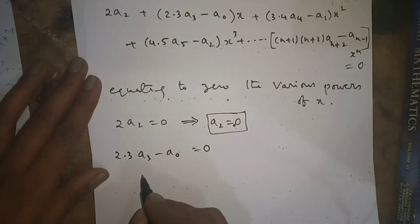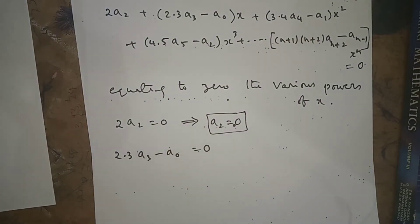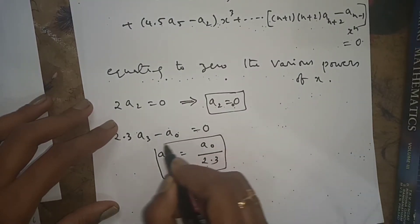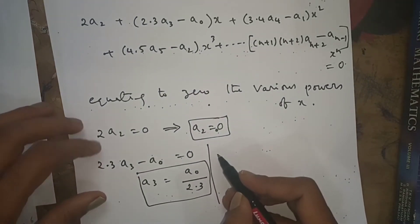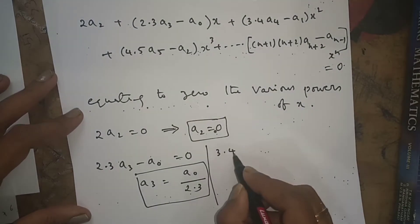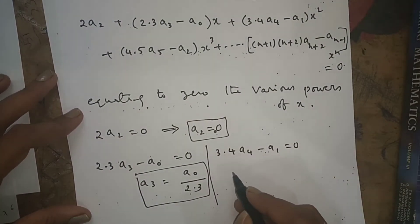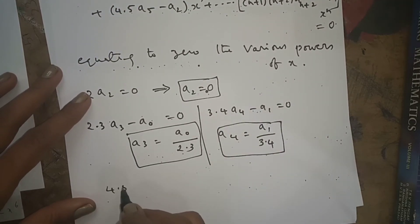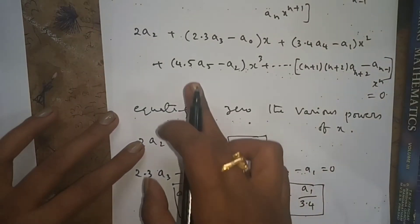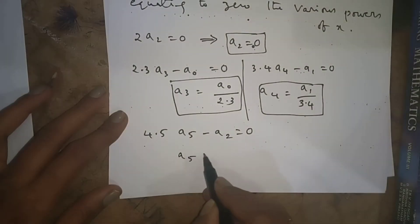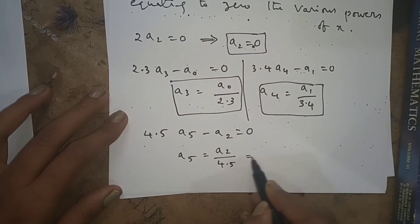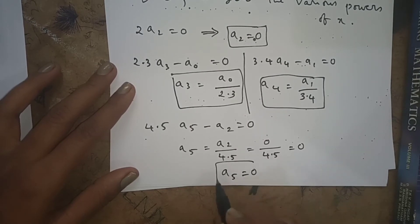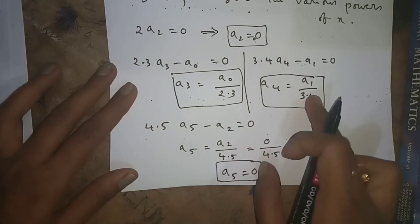Equating each coefficient to zero: the constant term gives 2a₂ = 0, so a₂ = 0. The x term gives 2·3·a₃ minus a₀ = 0, so a₃ = a₀/(2·3). The x² term gives 3·4·a₄ minus a₁ = 0, so a₄ = a₁/(3·4). The x³ term gives 4·5·a₅ minus a₂ = 0, so a₅ = a₂/(4·5) = 0, since a₂ = 0. Therefore a₅ = 0.